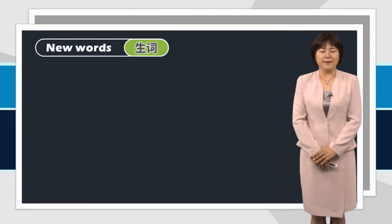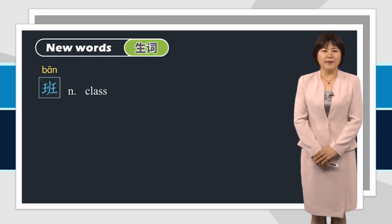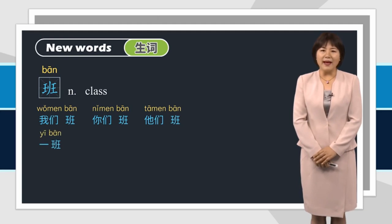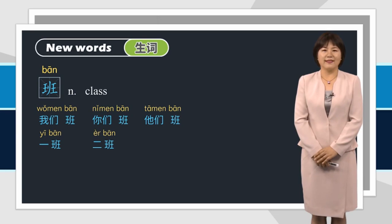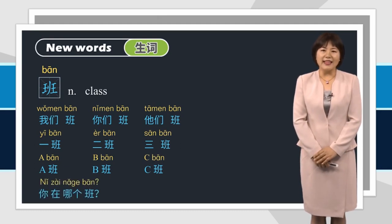Let's learn the new words first. 班，class。跟我读：班。我们班，你们班，他们班，一班，二班，三班，A班，B班，C班。你在哪个班？